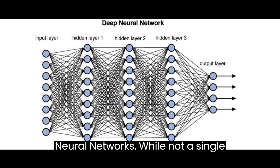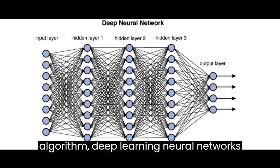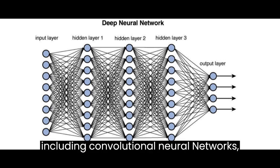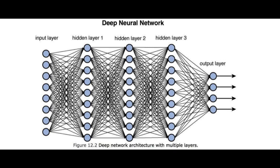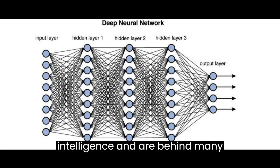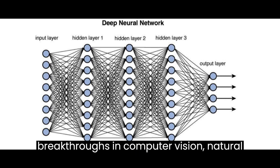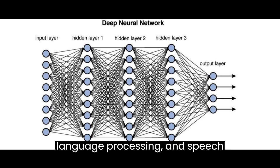Deep learning neural networks. While not a single algorithm, deep learning neural networks, including convolutional neural networks (CNNs) and recurrent neural networks (RNNs), have revolutionized artificial intelligence and are behind many breakthroughs in computer vision, natural language processing, and speech recognition.